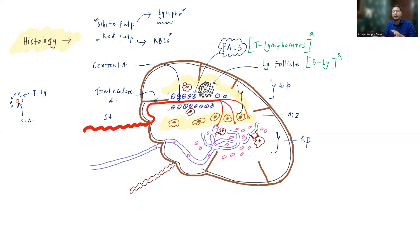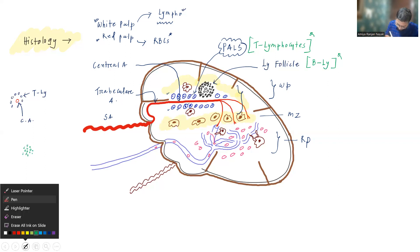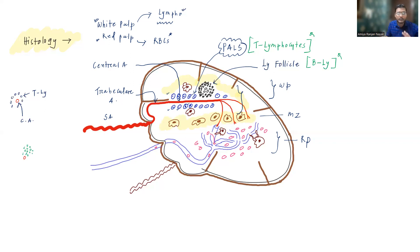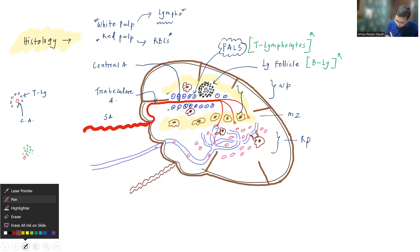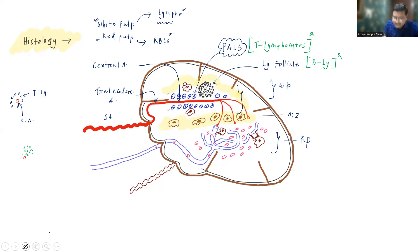If you take a cross-section at the level of lymphoid follicles, you will find the lymphoid follicle and the central artery in an eccentric arrangement. But if you take a cross-section at the level of the peri-arteriolar lymphoid sheath, you will find the central artery in a central position. Even when lymphoid follicles are present, the central artery will still be surrounded by some T lymphocytes.